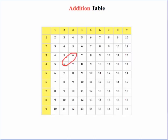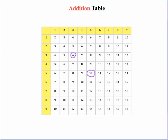Let's look at the addition table one more time, diagonally. Take 6 plus 6 and 5 plus 7. To get from 6 to 5 we subtract 1, and to get from 6 to 7 we add 1 — a net change of 0, which is why both sums are still 12. What about 6 and 10 versus 8 and 8? They're both 16. Adding 2 to the 6 and subtracting 2 from the 10 gives us 8 and 8 — the plus 2 and minus 2 is a net change of 0, resulting in the same sum of 16.